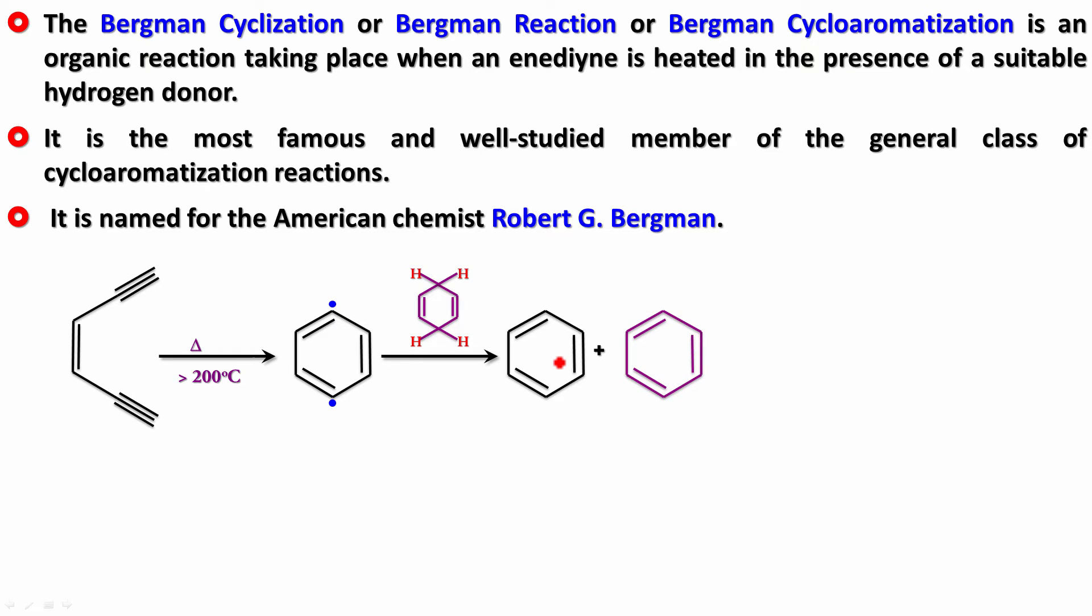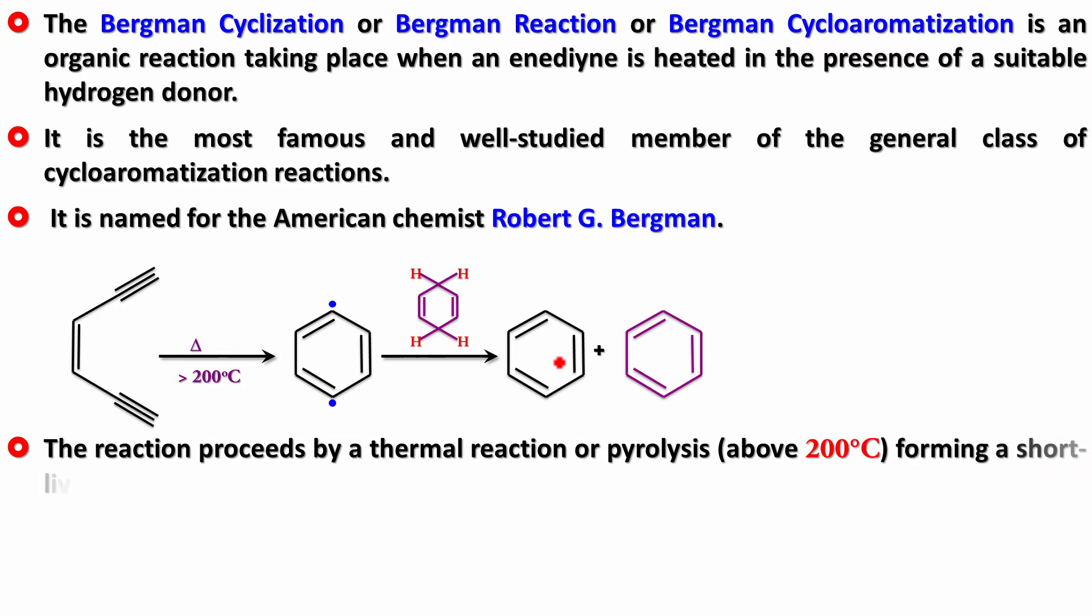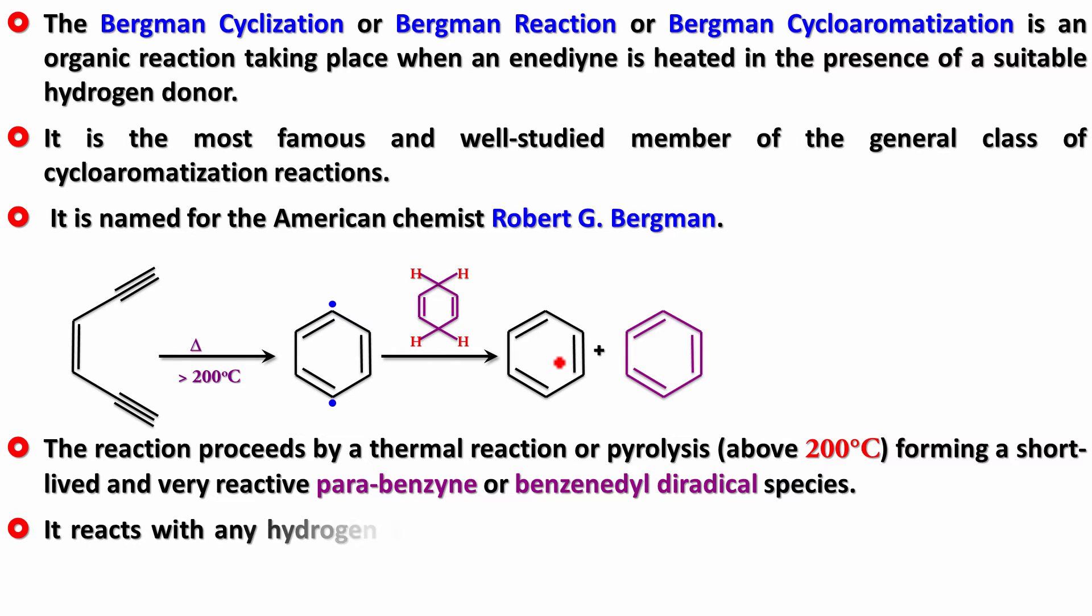The reaction proceeds by the heating process and forms a short-lived and very reactive para-benzene or benzene diradical species. Then it reacts with the hydride hydrogen donor, which itself forms benzene.